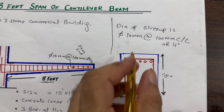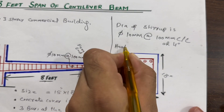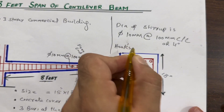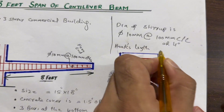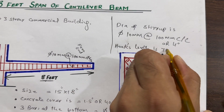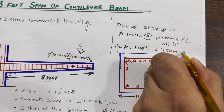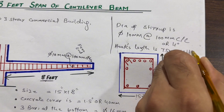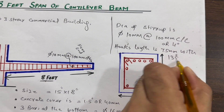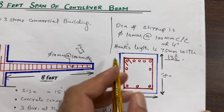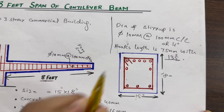The hook length is 75 millimeters with a 135-degree angle bend. You can see this clearly.